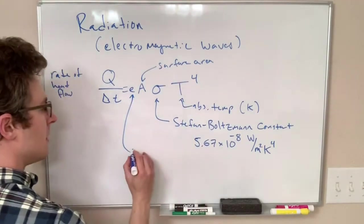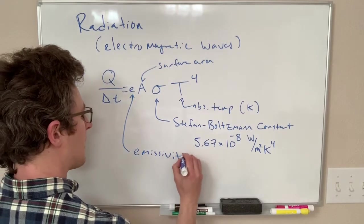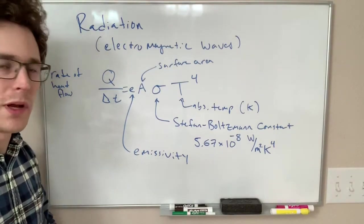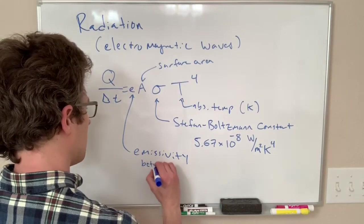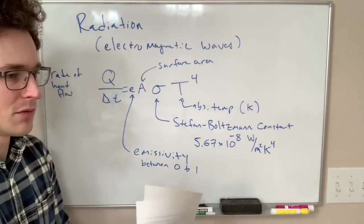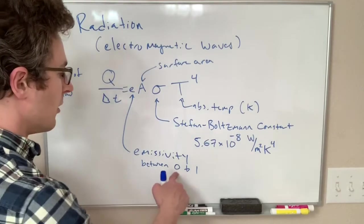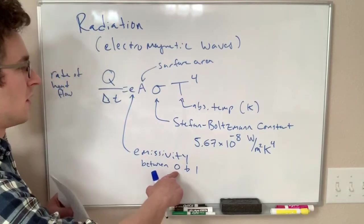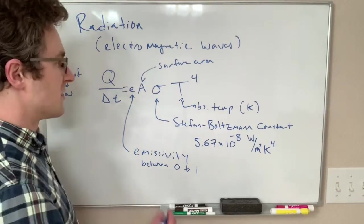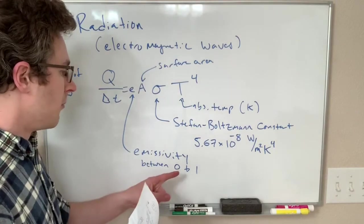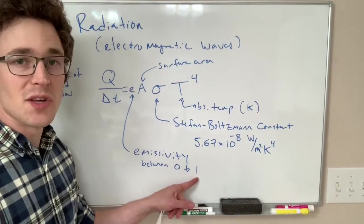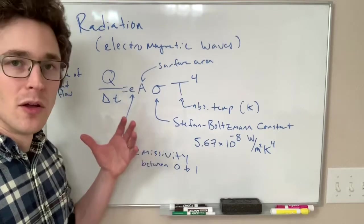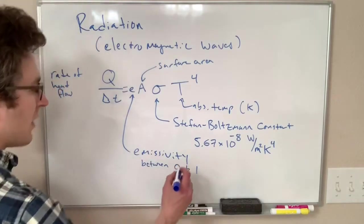And E here is something called the emissivity. Emissivity. And this is how good an object is at radiating. So this is between zero and one. Zero represents an object that is perfectly reflective, and therefore because it's reflecting light, it turns out it does not have to emit any radiation. One is something that actually both perfectly absorbs radiation and emits this maximum amount of radiation. So a value of one here...